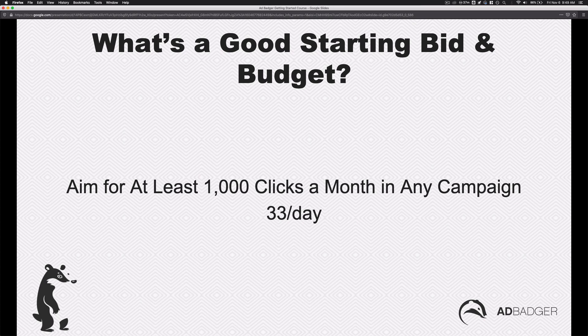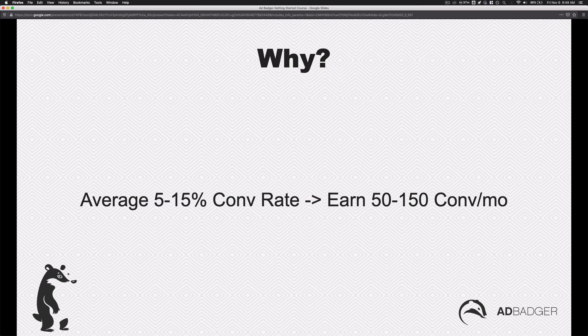So in general, what's a good starting bid and budget? Ideally, we'll want to aim for at least a thousand clicks a month in any campaign — that's about 33 a day. We didn't just pull this number arbitrarily. The reason is because about a 5 to 15% conversion rate, which is about the average on sponsored products, would equate to about 50 to 150 conversions or orders a month.